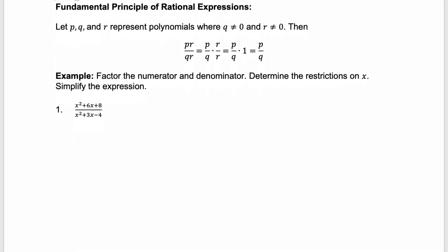The fundamental principle of rational expressions: if you have polynomials p, q, and r, where q and r are not equal to 0, you could factor them. If you get p times r over q times r, that can be broken up as p over q times r over r. We're simplifying because r over r is equivalent to 1, and 1 times anything is itself. This shows us how you can simplify these rational expressions. The key is to factor.